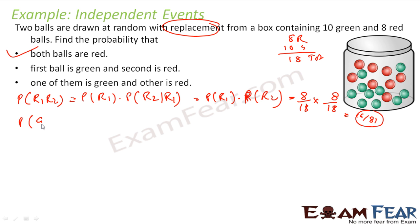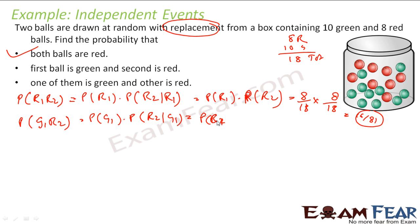The second part says: probability of first green and second red. This is P(first green) × P(second red | first green). Since they are independent, it equals P(G1) × P(red 2). Probability of green is 10/18 because there are 10 greens out of 18 total balls. Probability of red is 8/18 because there are 8 red out of 18 total balls. So this becomes 10/18 × 8/18.